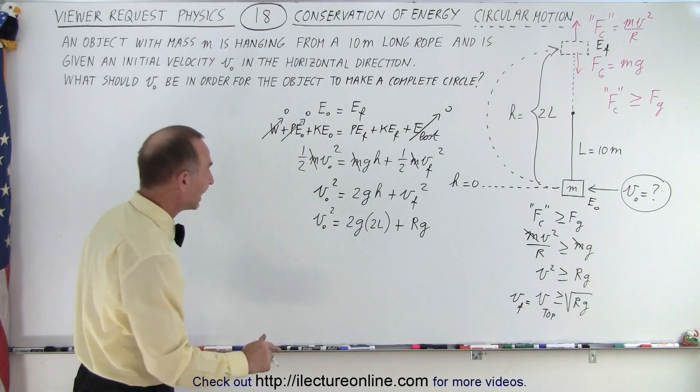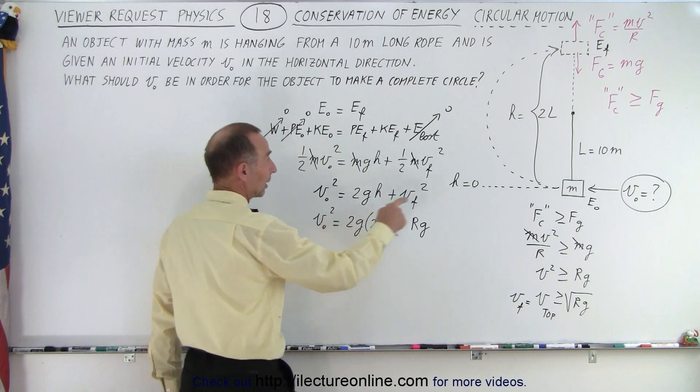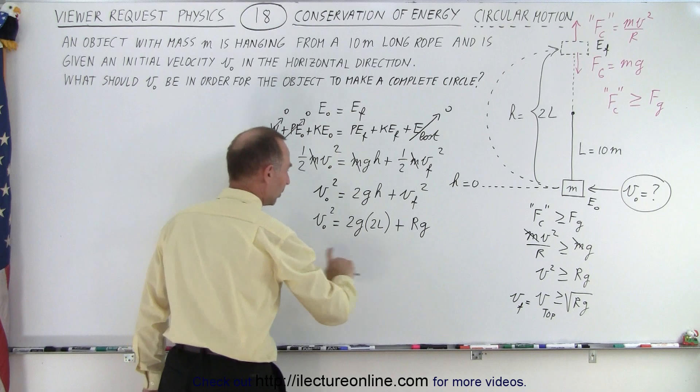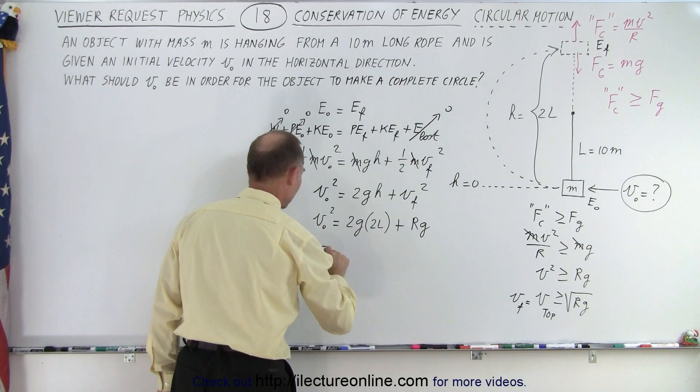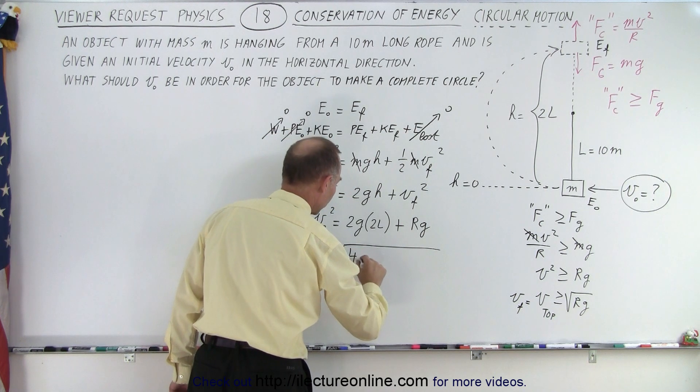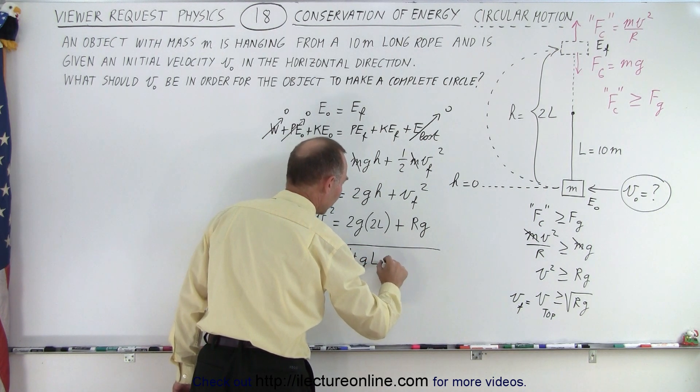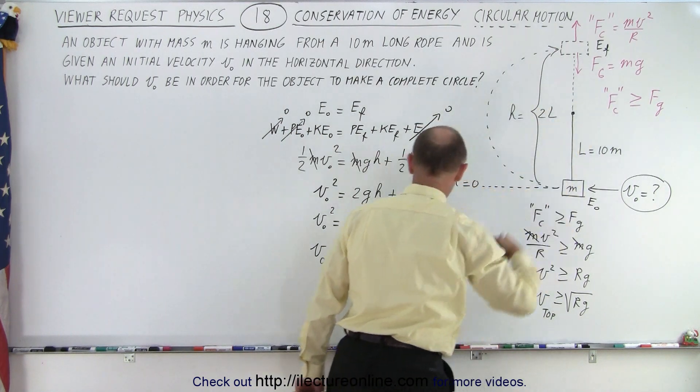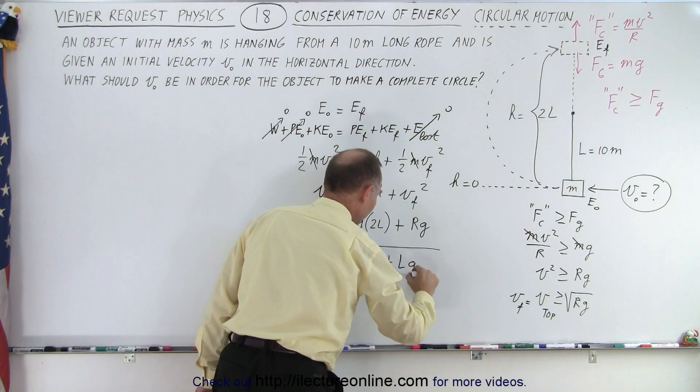All right. So what we're looking for? The initial velocity required to keep the rope tight and it can go all the way around. So let's plug in what these are equal to. So we have V initial is equal to the square root of 4G times the length plus R times G. Now remember R is the radius of the circular path that would be equal to the length so it would be L times G.